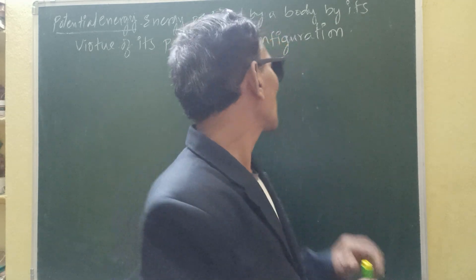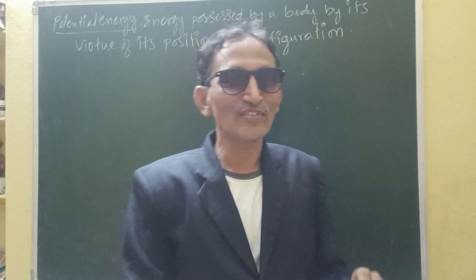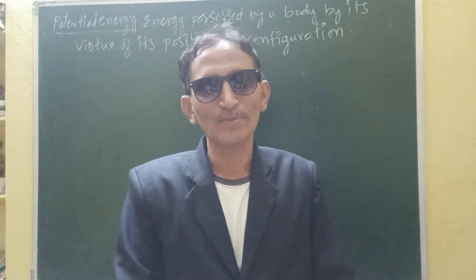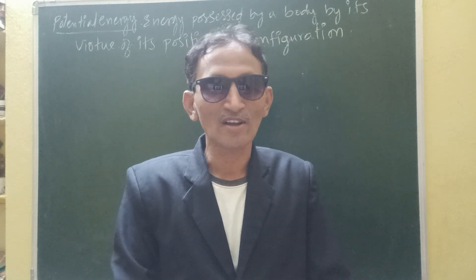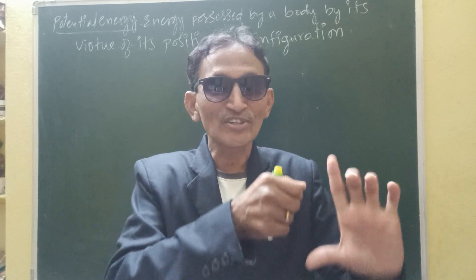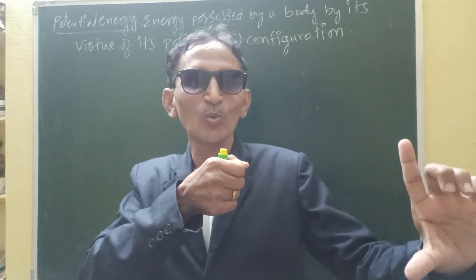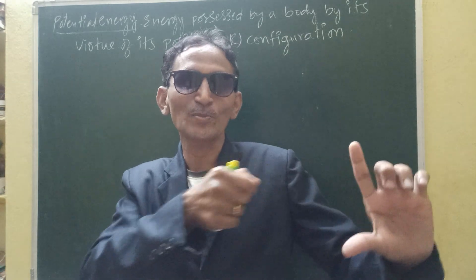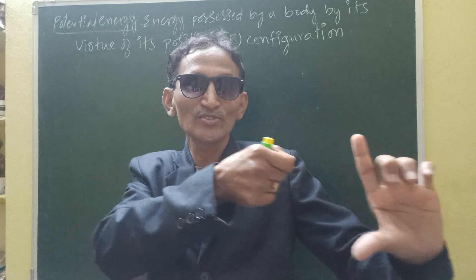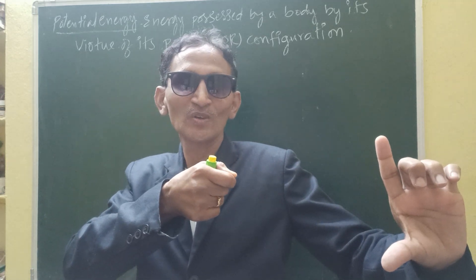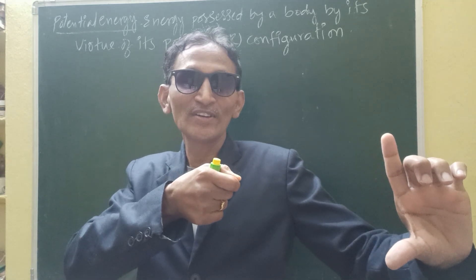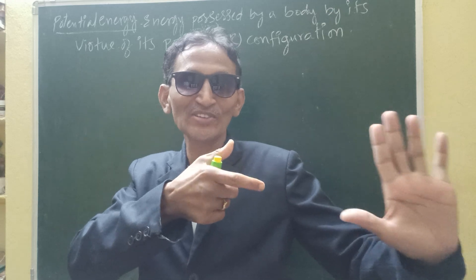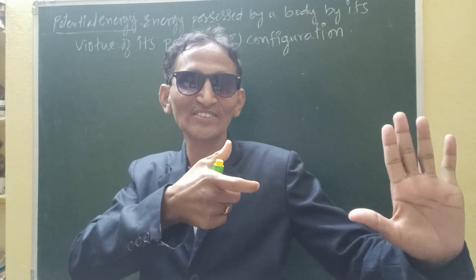Now let us discuss about configuration. Configuration means a change of shape — a change of shape we are calling it as configuration. A stretched string in a bow has Potential Energy. The string has Potential Energy when you stretch it from the bow, so it will be very stiff. It has Potential Energy.